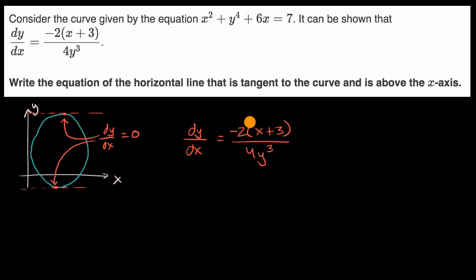And so when will this equal zero? Well, it's going to equal zero when our numerator is equal to zero and our denominator isn't. So when is our numerator going to be zero? When x is equal to negative three. So when x is equal to negative three, the derivative is equal to zero.